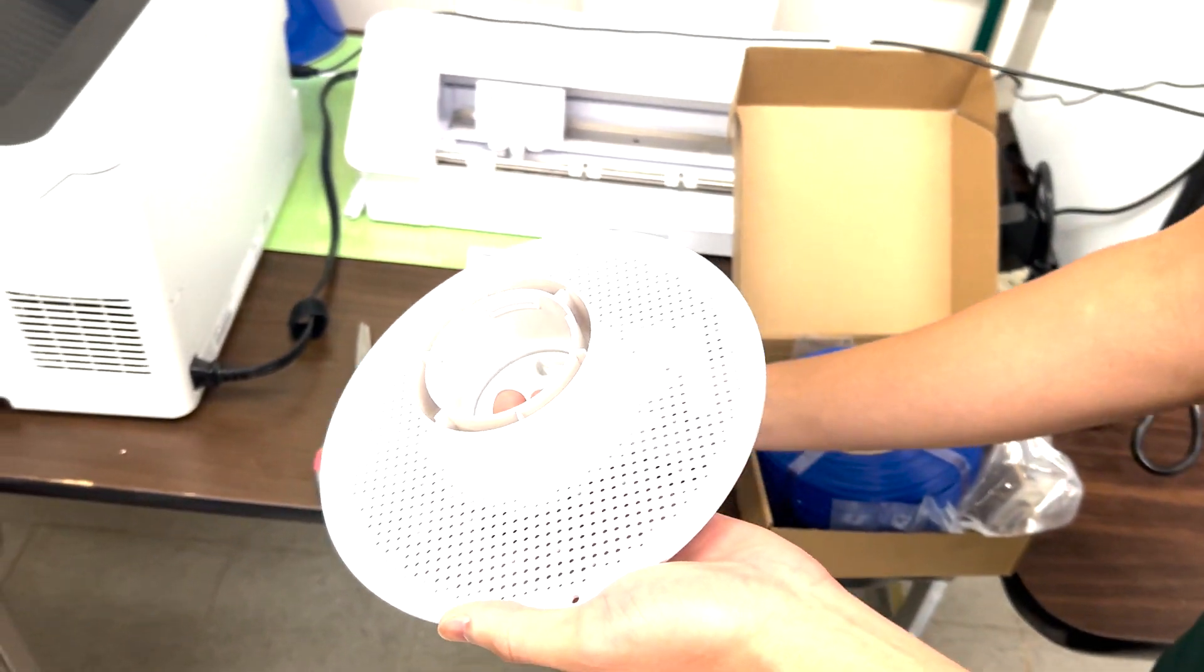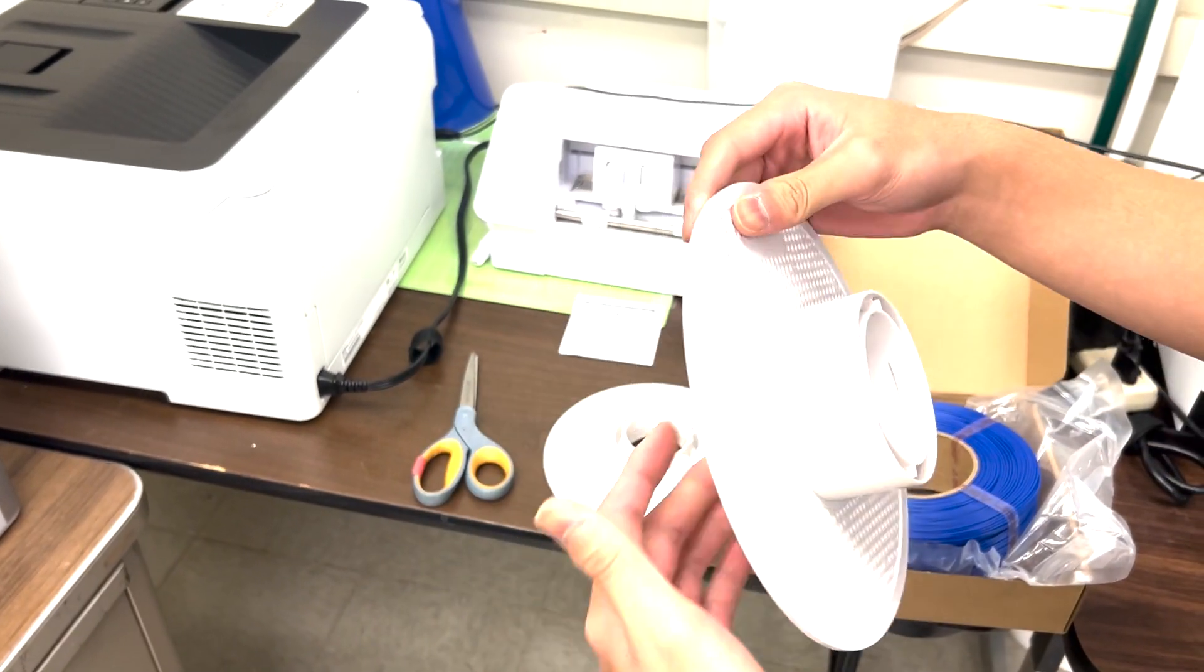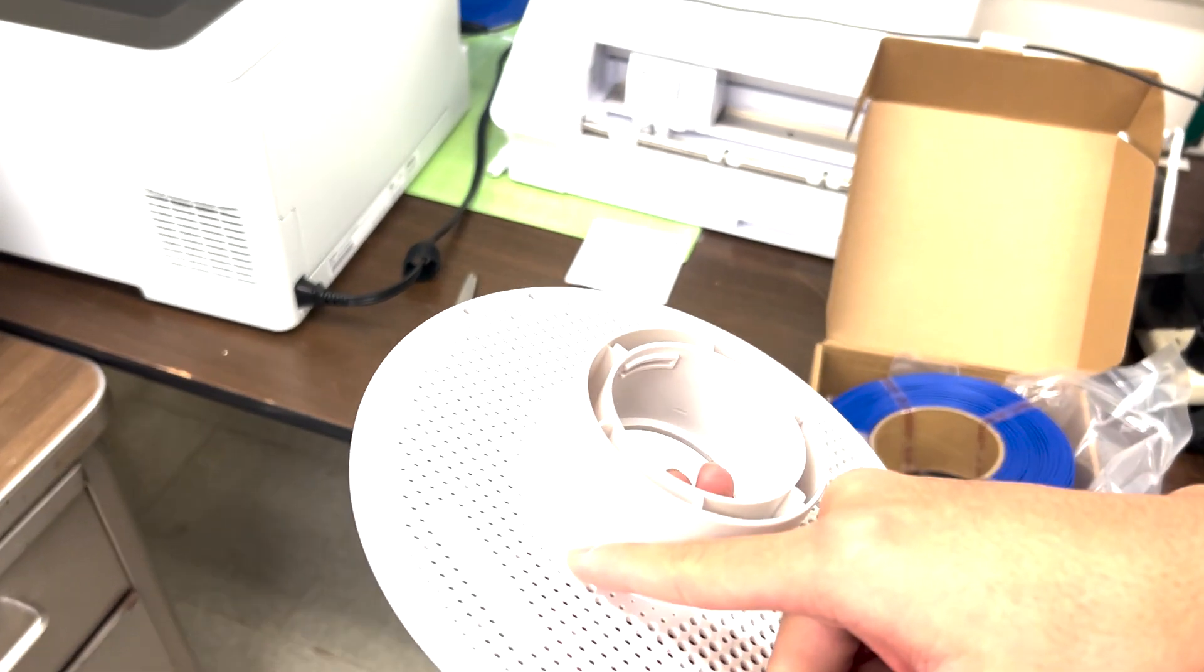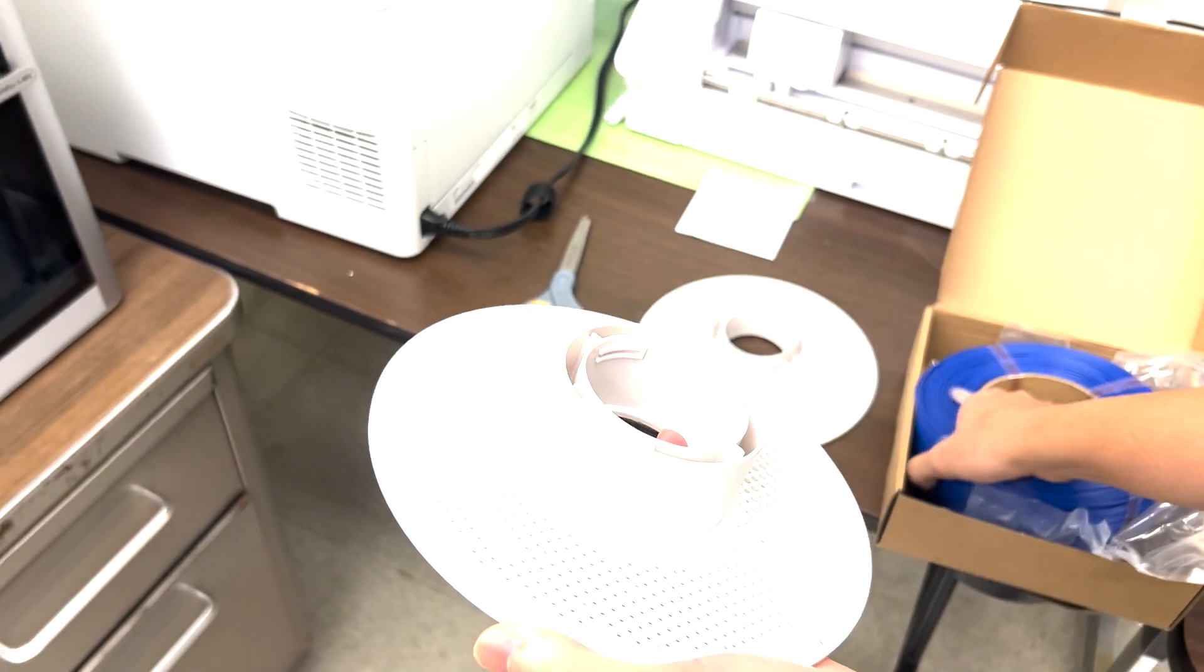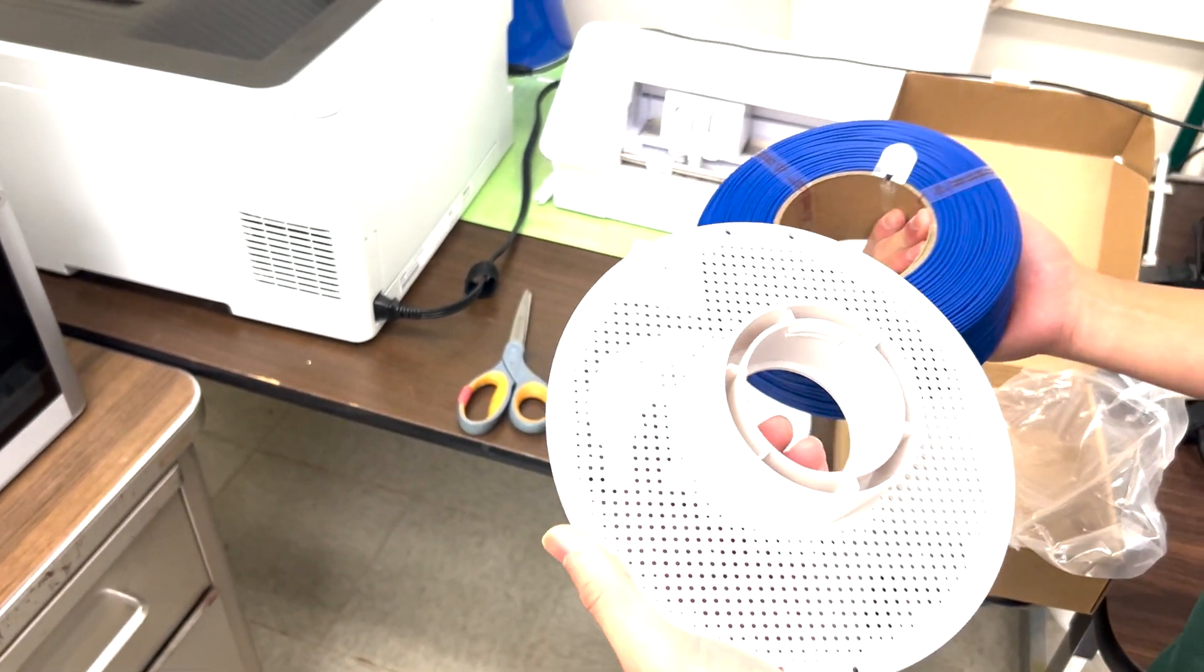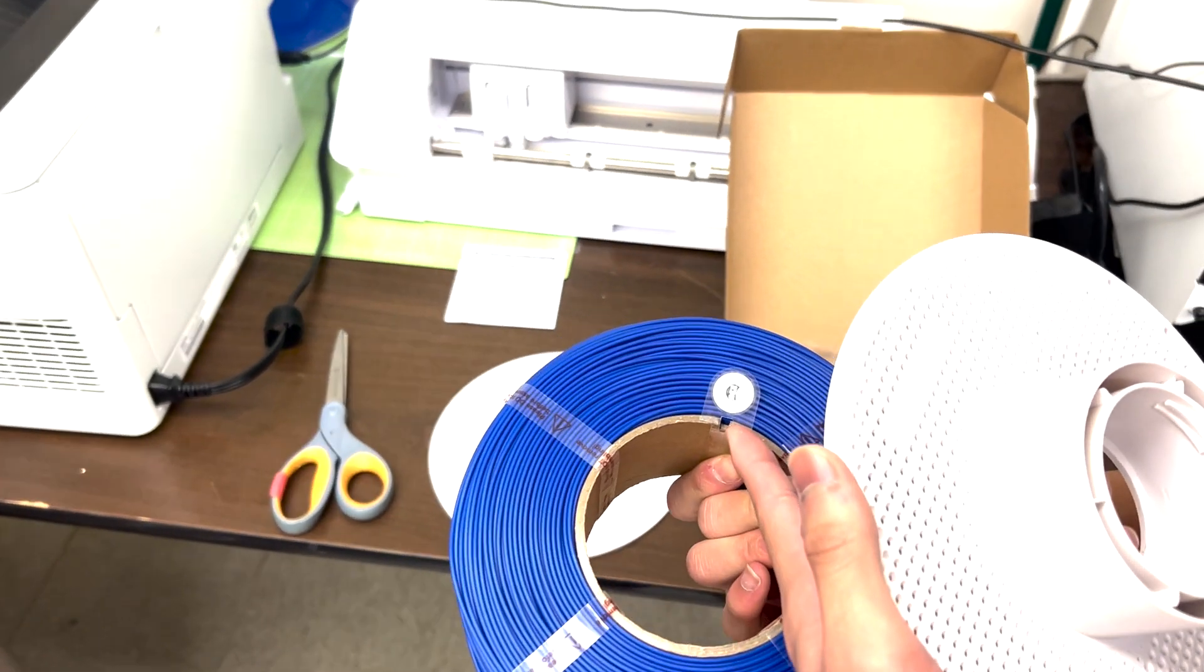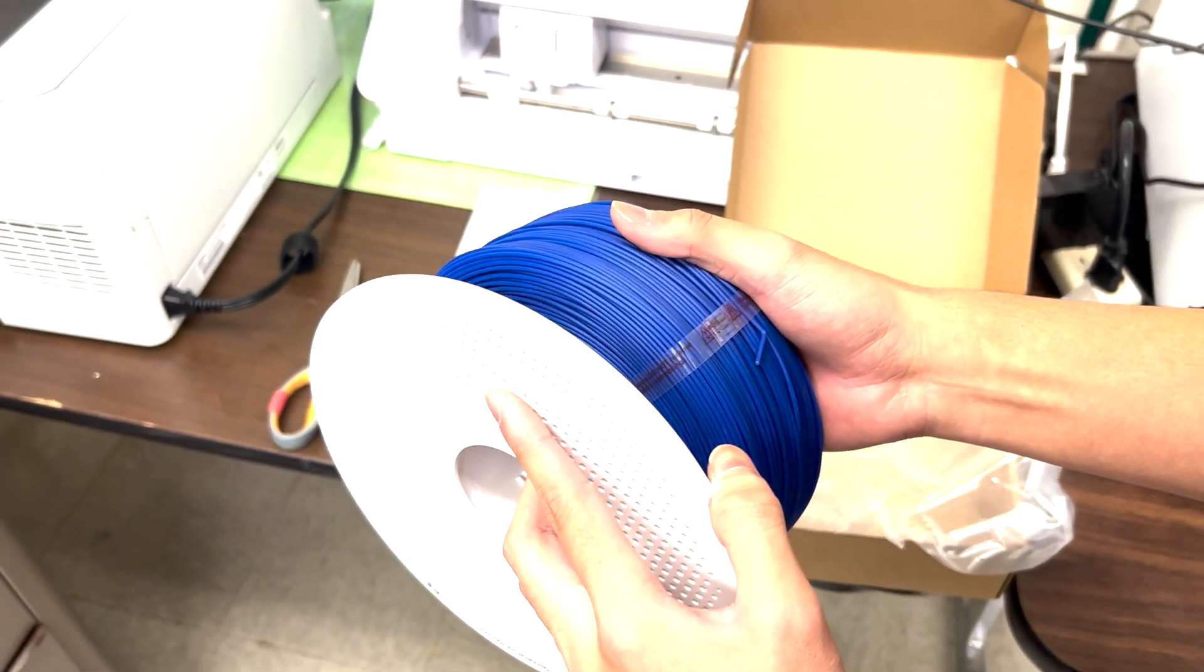Now we're going to find the notch on one side of the filament, just right here. Then we'll find the hole in the filament, just right there. We're just going to match it together.